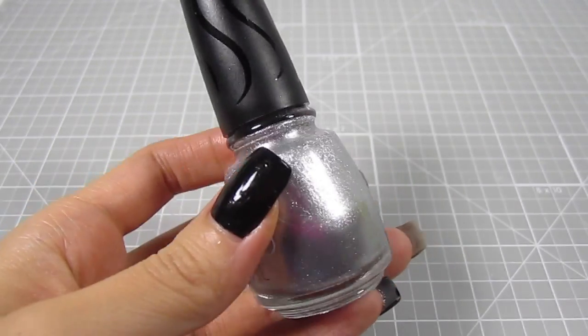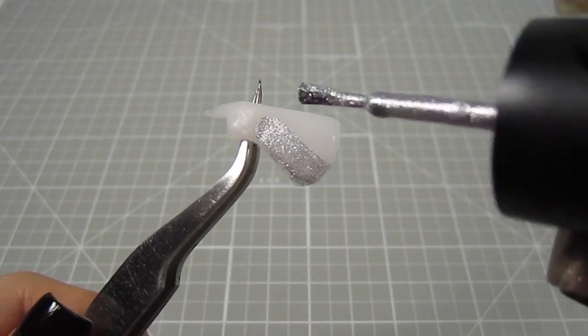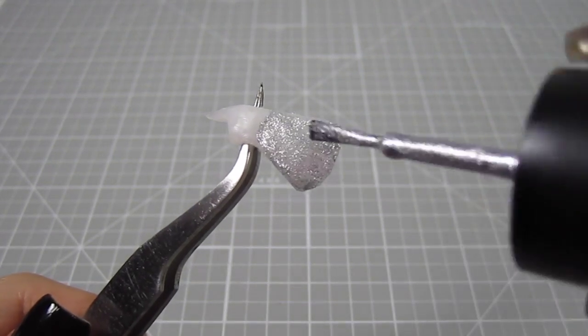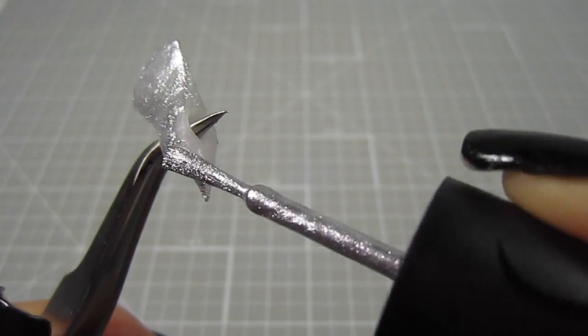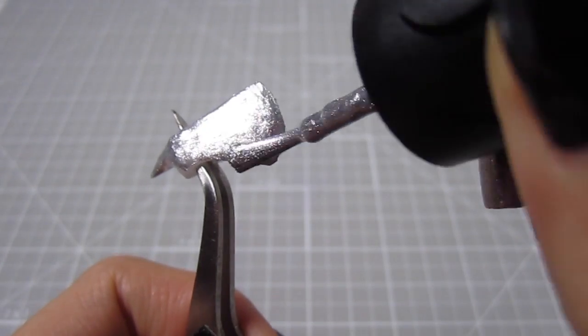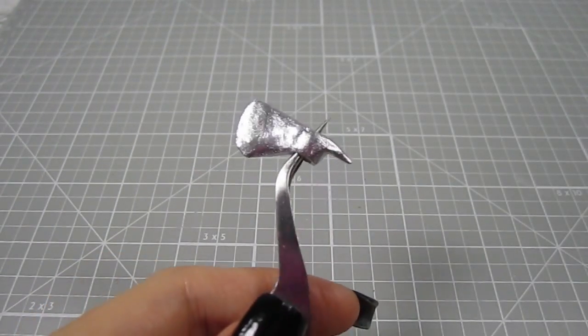For the head of the hatchet, I'm using some silver nail polish. You can also use acrylic paint, spray paint, enamel, really anything. I just love the look of this nail polish so that's what I'm going with. I paint on a few coats for a smooth look. Looking pretty good.